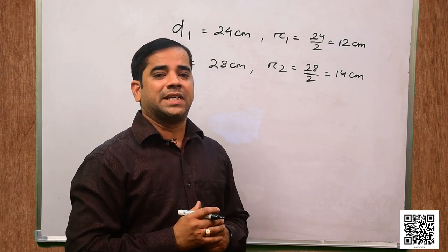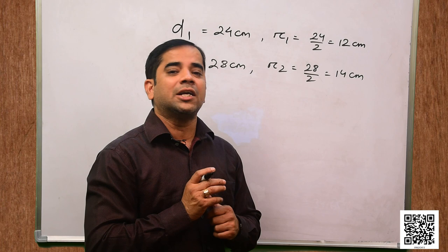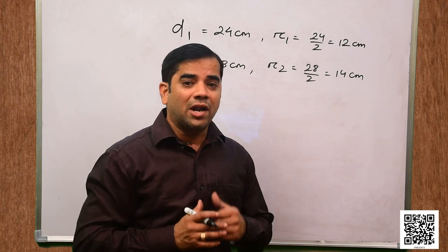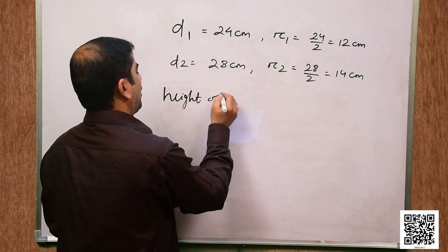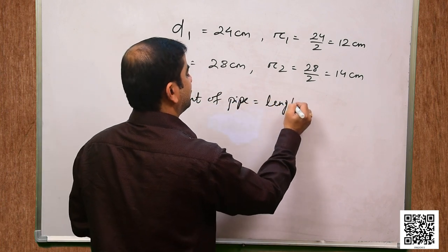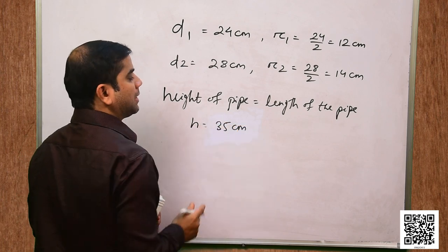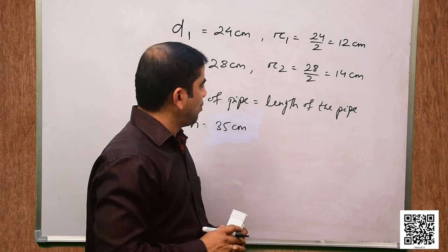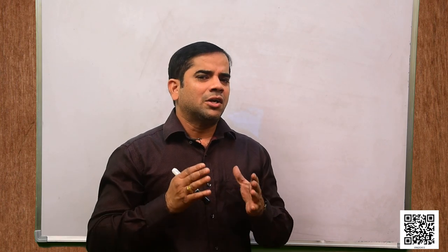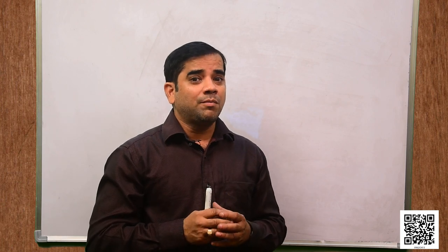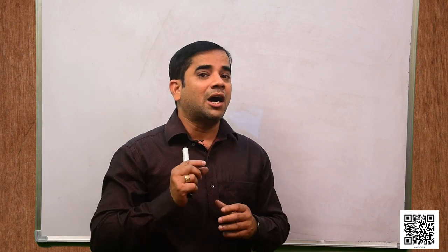Height of the pipe is 35 centimeter — height is not mentioned in the question but the length of the pipe is, and the length of a cylinder is nothing but its height. So height = 35 cm. The volume of the pipe should be the difference between the volume using the outer radius and the inner radius, because the pipe has a thickness.